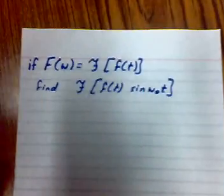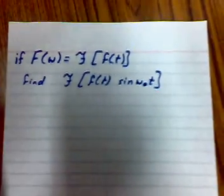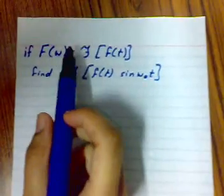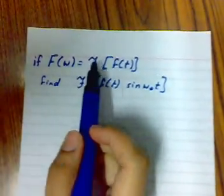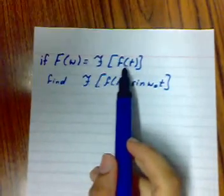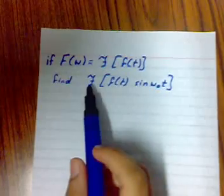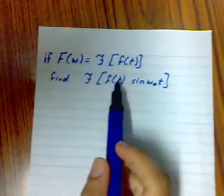Hi, we will talk about the Fourier transform. Here's an example about it. We have a function F of omega equal as a Fourier transform of f of t. We want to find the Fourier transform of f of t over t multiplied by sine omega naught t.